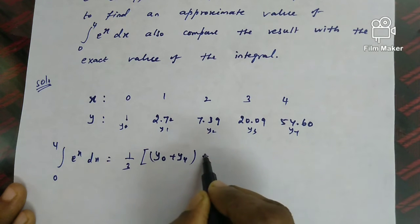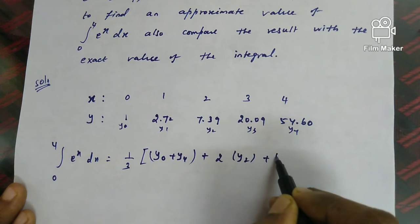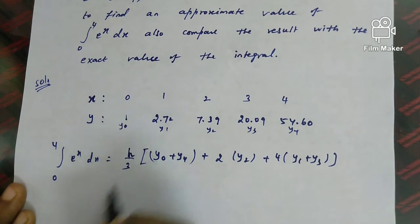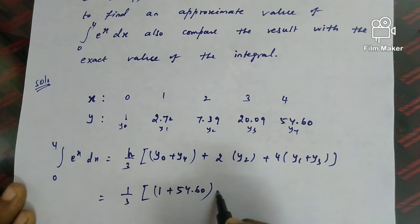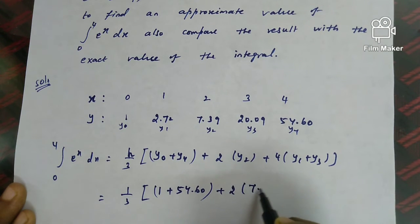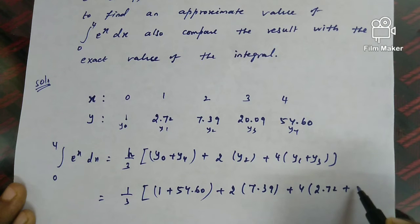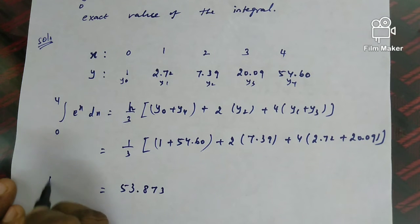Substituting all values: 1/3 × [(y₀=1) + (y₄=54.60) + 2×(y₂=7.39) + 4×(y₁=2.72 + y₃=20.09)]. After calculating, the answer is 53.873. So ∫₀⁴ eˣ dx ≈ 53.873 by Simpson's rule.